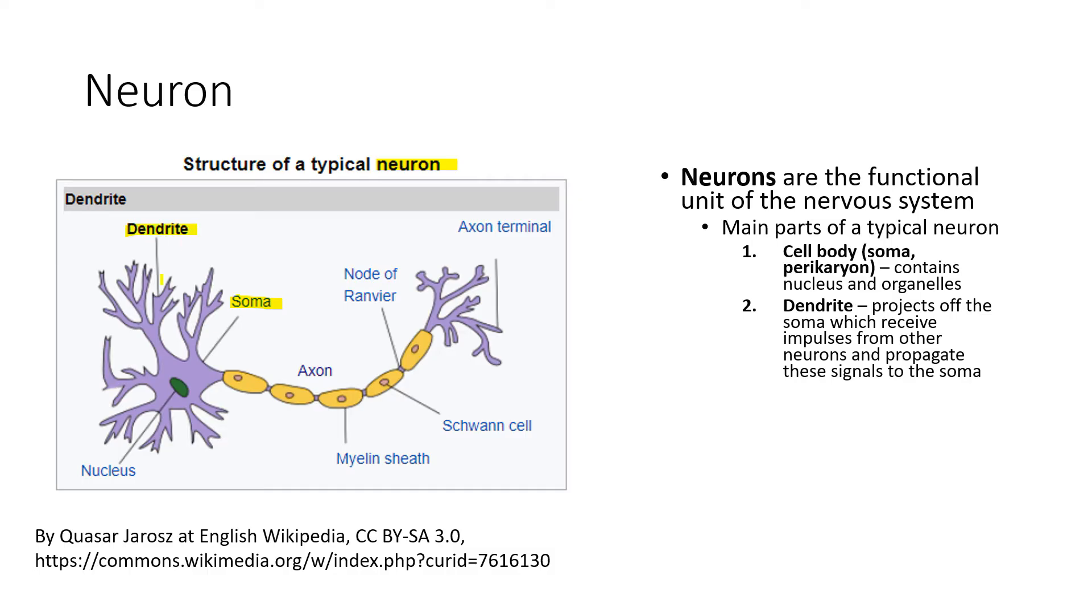There are dendrites, which are projections off of the soma, which receive impulses from other neurons and propagate these signals to the soma.